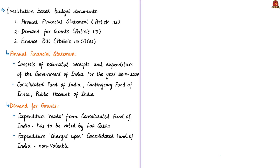Yesterday, the Union Finance Minister, while presenting the budget speech, also presented certain documents before Parliament that are based on the Indian Constitution. One among such documents is the Annual Financial Statement, which is based on Article 112 of the Indian Constitution. The document 'Demand for Grants' is under Article 113 of the Indian Constitution. Finally, the Finance Bill is based on Article 110, Clause 1 of the Indian Constitution.